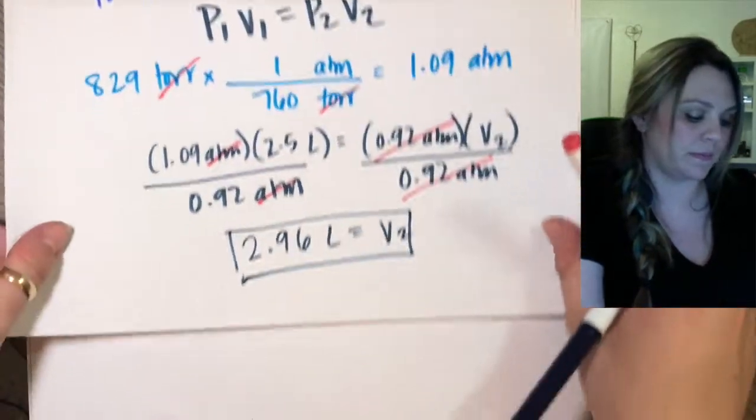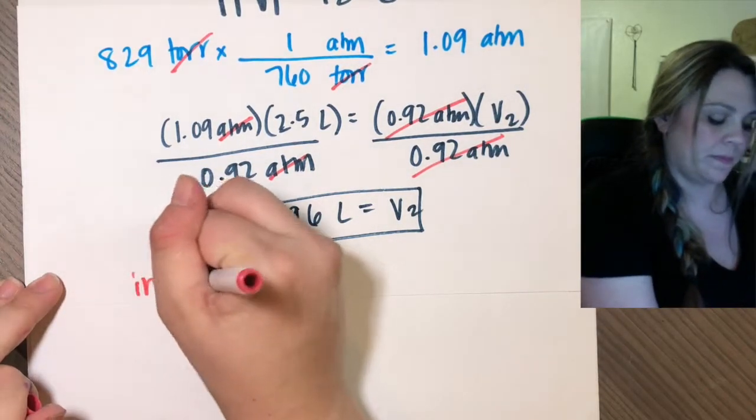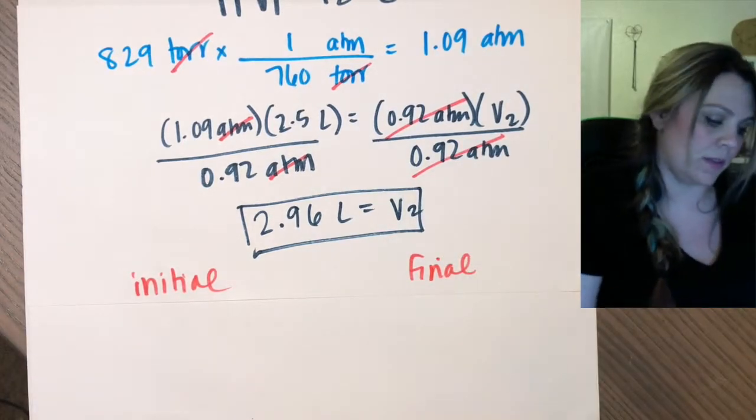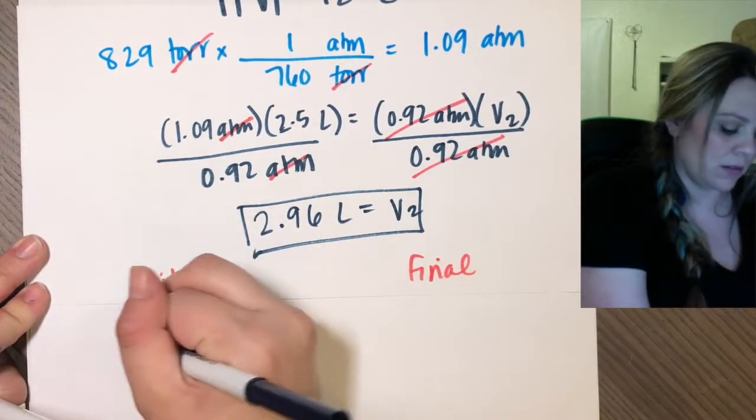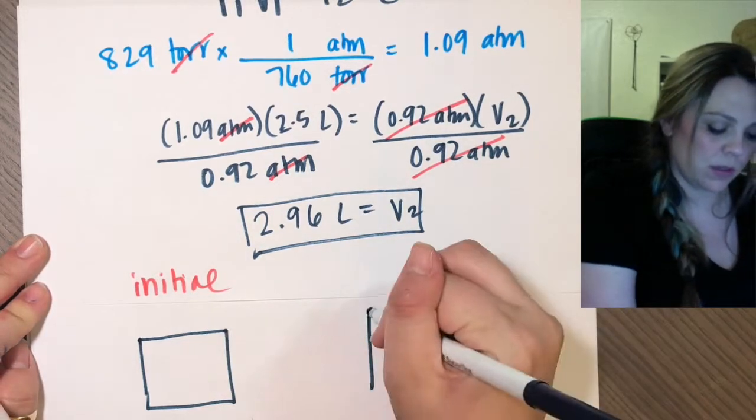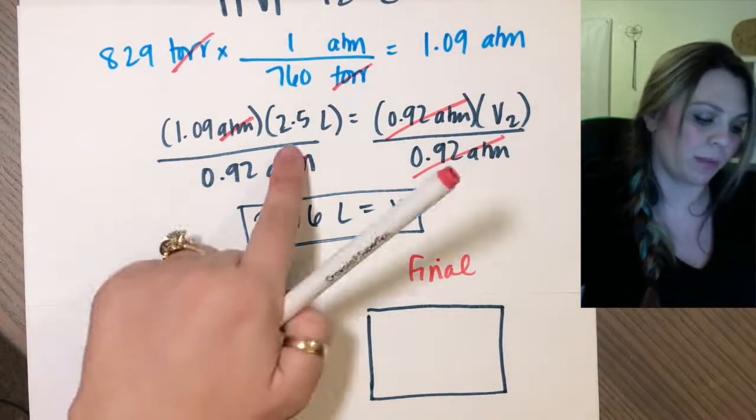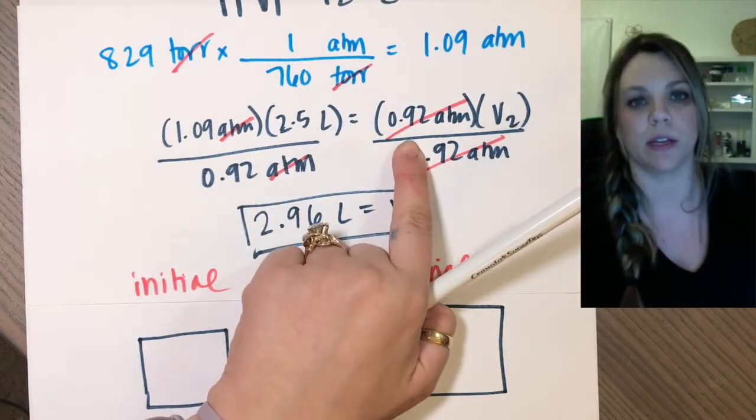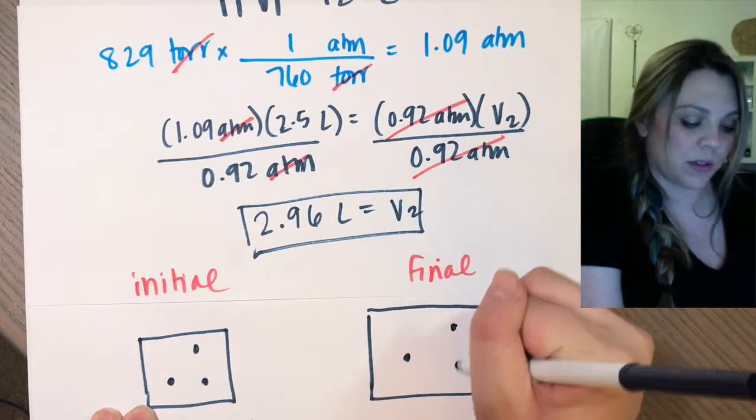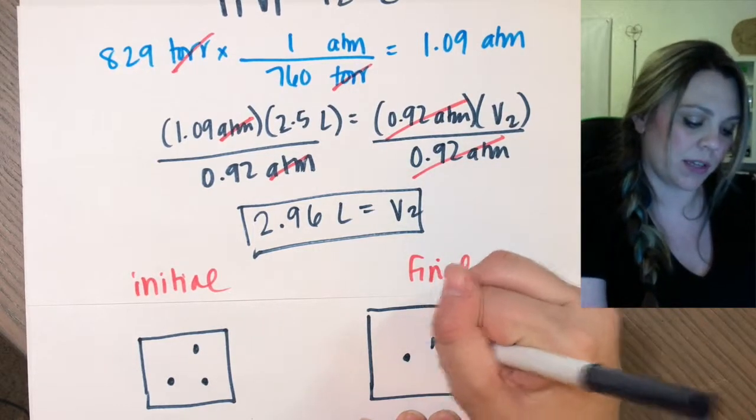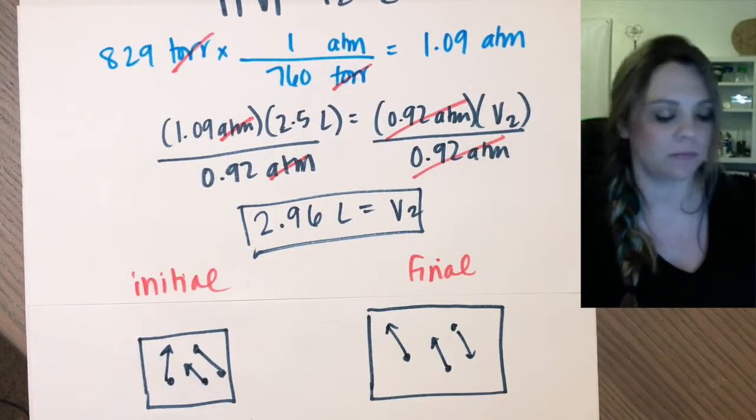And again, I would make you draw your initial and final conditions. So initial, final. I started with a volume of 2.5. I ended with a volume of 2.9. So in this case, my initial volume is smaller than my final volume. My final volume is bigger. My pressure went down. It went from 1.09 to 0.92. But my number of molecules didn't change. My temperature didn't change. So if I started with 3, I better end with 3. And whatever size arrow I draw has to be the same to show that the temperature didn't change. Easy enough.